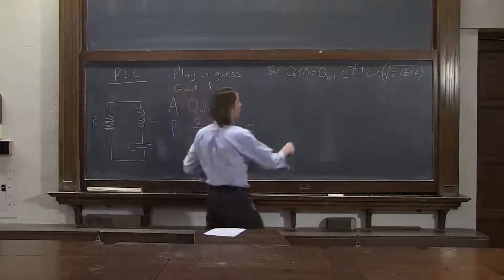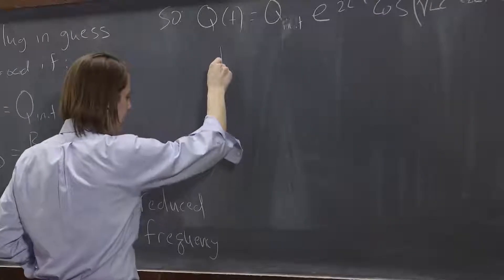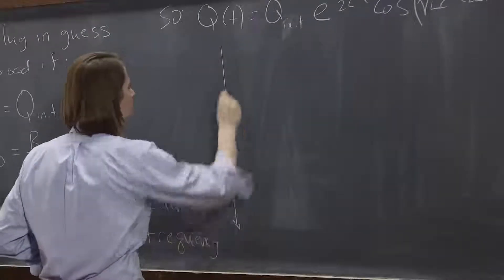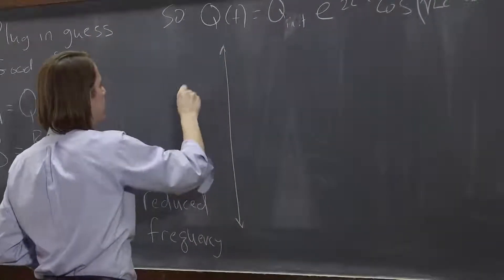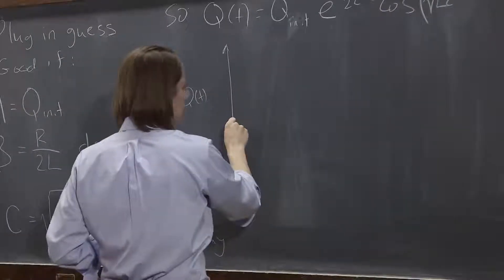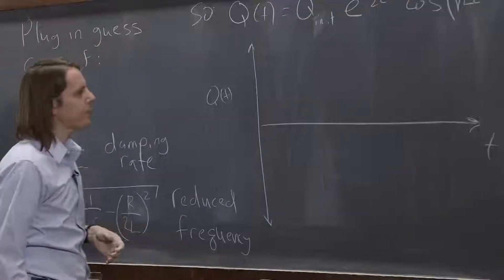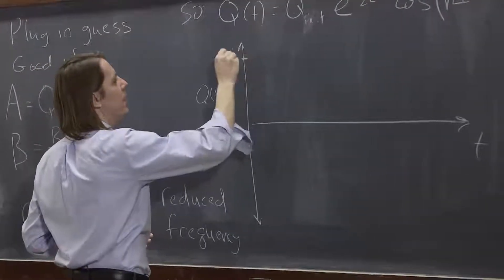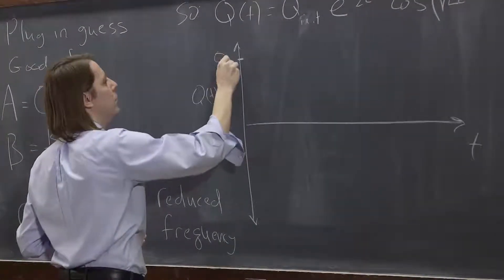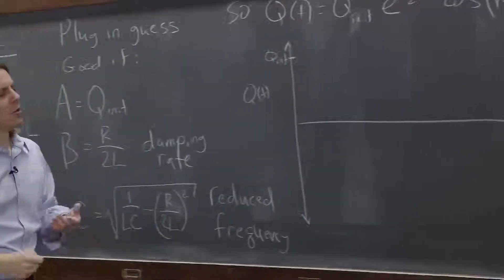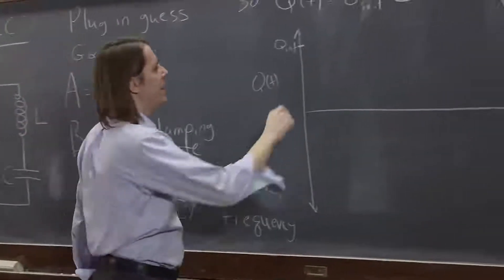So now let's plot it. Let's look and see what would it really look like. This would be Q as a function of time. And we have a time axis like that. And it's going to start at some Q init, or you might call it Q max. And it's going to oscillate and decay.